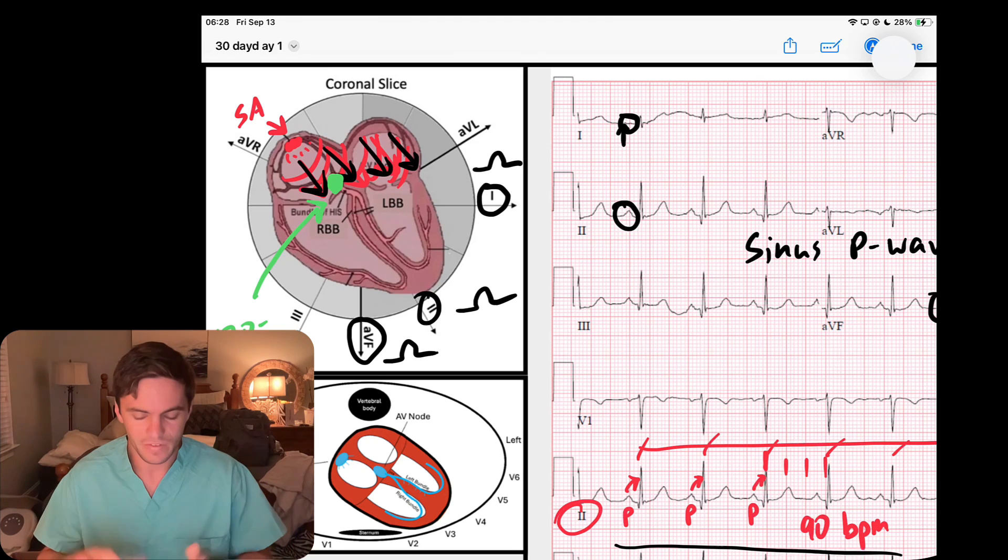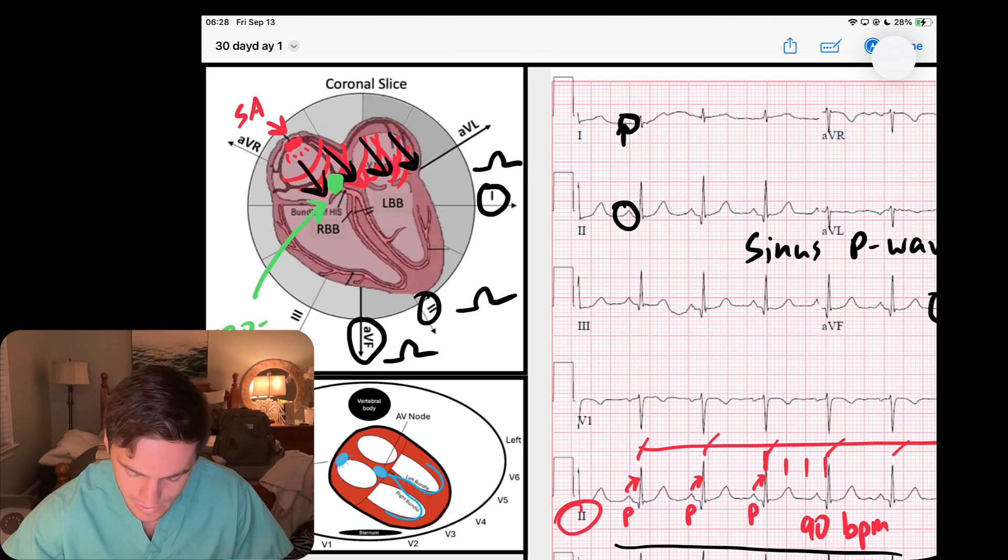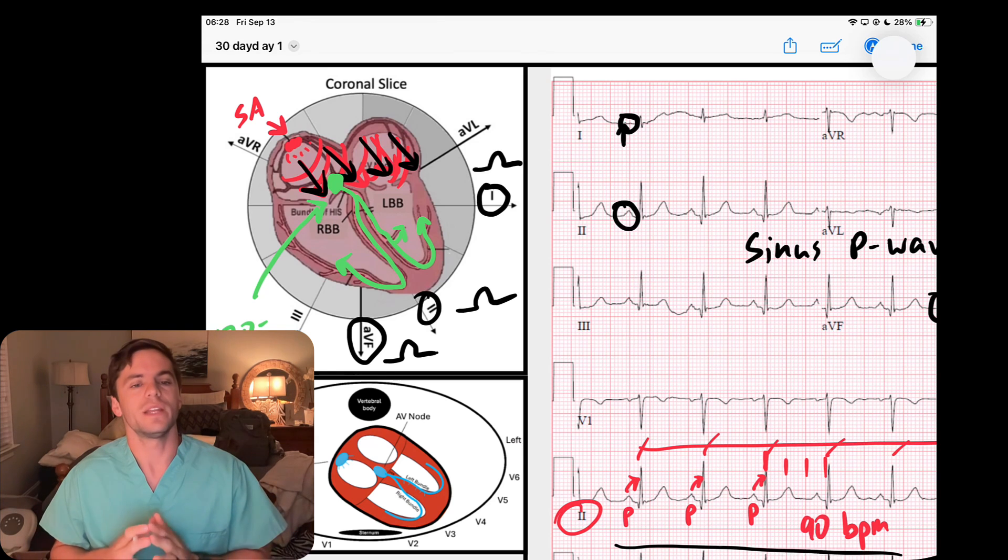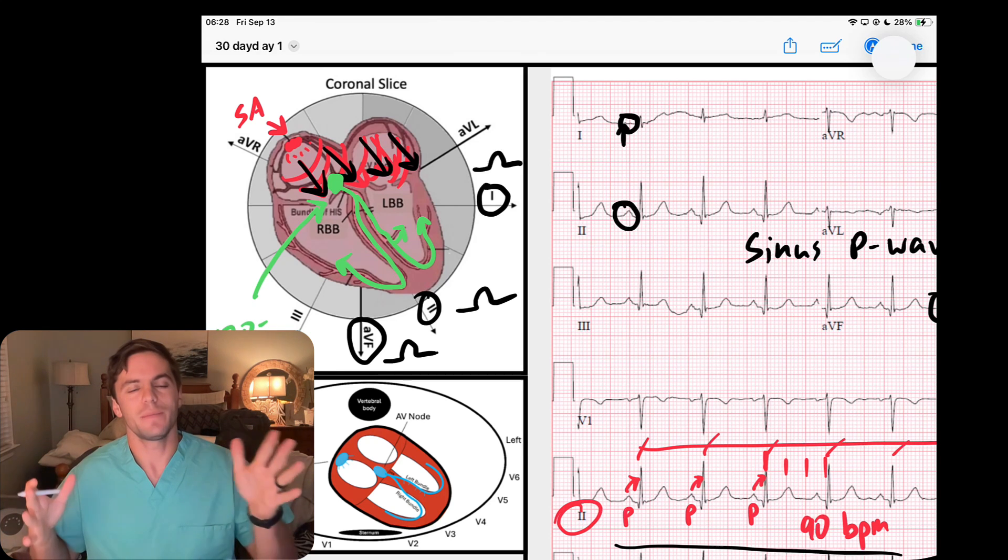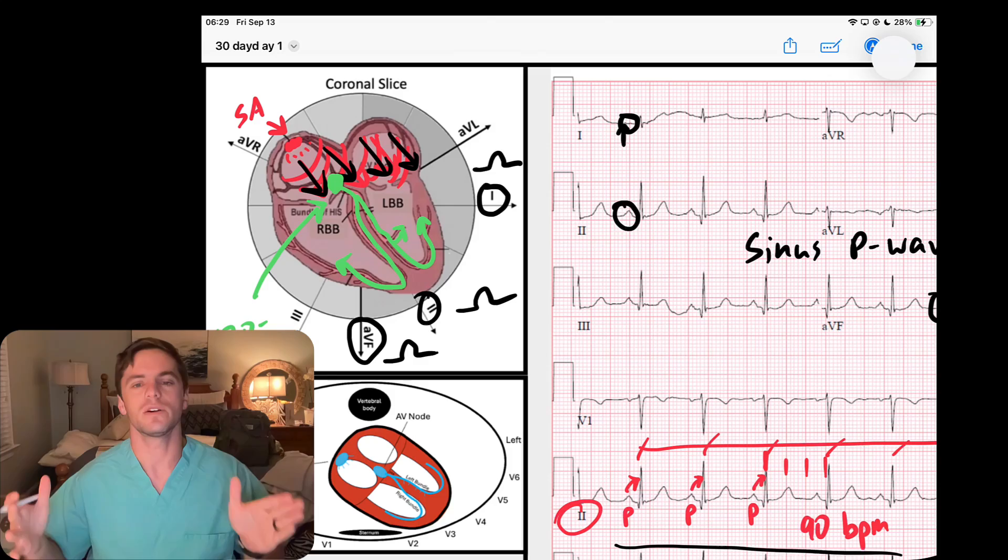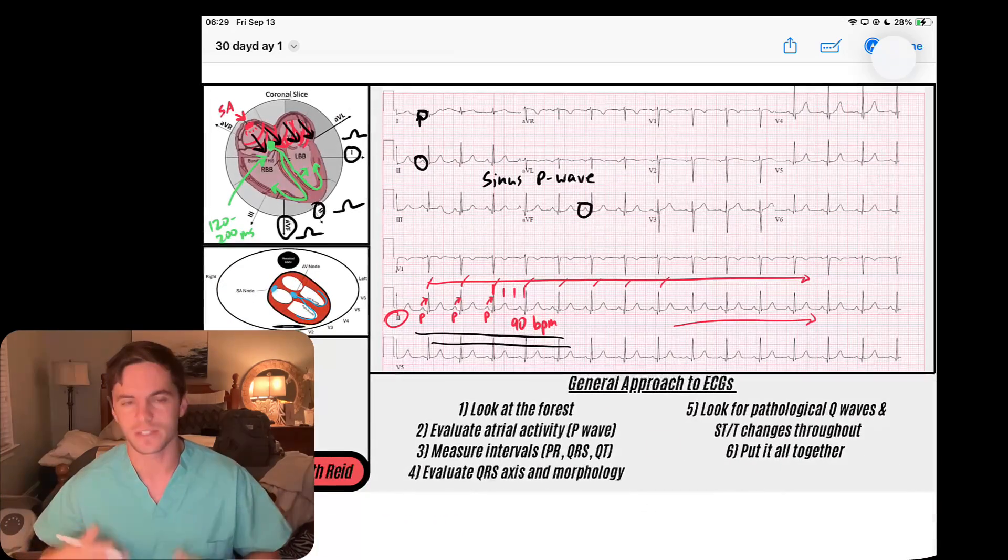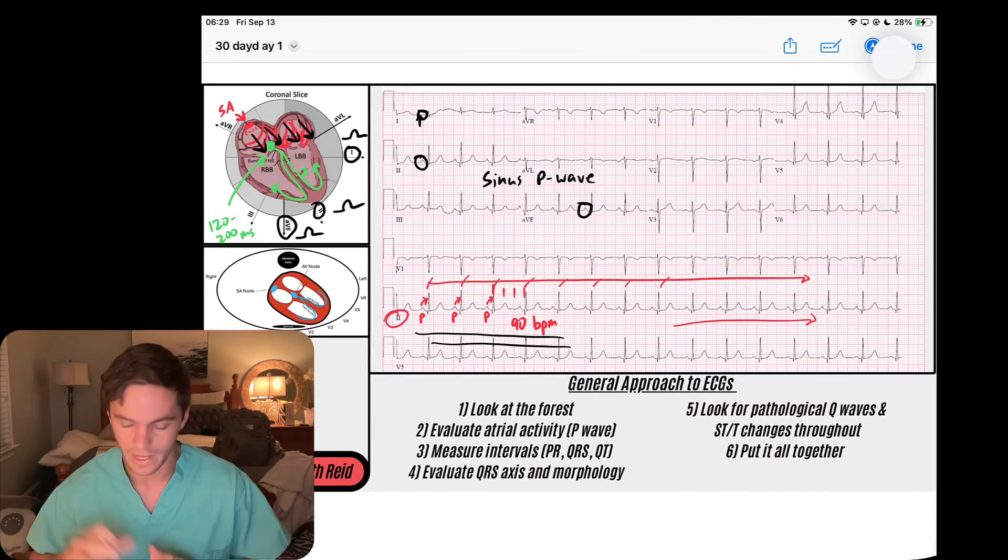Then they can contract 200 milliseconds later and expel all that blood out. It's a physiologic thing. It pauses that signal for 120 to 200 milliseconds, and then the next step, it sends it down for ventricular depolarization.